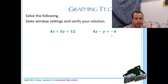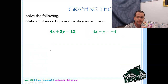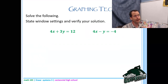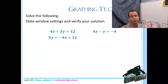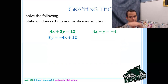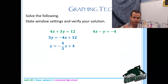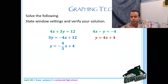New question: solve the following, state the window settings, and verify your solution. The first step is always to rewrite in y = mx + b form — this is where you'll want to pause and try things yourself. Isolating y in the first equation: bring 4x over and divide by 3, giving y = -4/3 x + 4. For the other equation, bring y over and get y = 4x + 4.